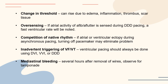Other issues that can arise: a change in threshold caused by edema, inflammation, thrombus, or scar tissue in the heart. Oversensing — if atrial activity of AFib or AFlutter is sensed during DDD pacing, a fast ventricular rate will be noted. Competition with native rhythm — if atrial or ventricular ectopy occurs during asynchronous pacing, turning off the pacemaker may eliminate this problem. Inadvertent triggering of VF or VT — ventricular pacing should always be done using DVI, VVI, or DDD. Finally, mediastinal bleeding: several hours after wire removal, patients must be observed carefully for tamponade, as that is always a possibility when pulling wires from the heart.